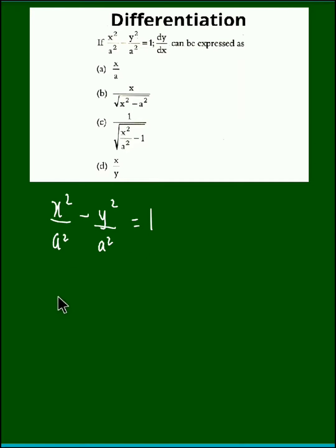This could be written as (x² - y²)/a² = 1. If we multiply a² on the right-hand side, we obtain x² - y² = a². Now we differentiate with respect to x.